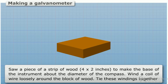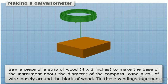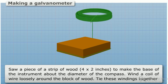About the diameter of the compass, wind a coil of wire loosely around the block of wood.